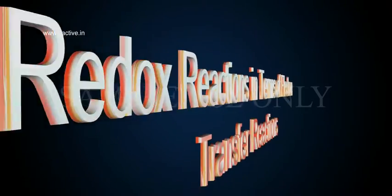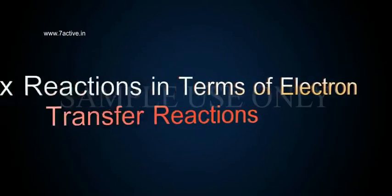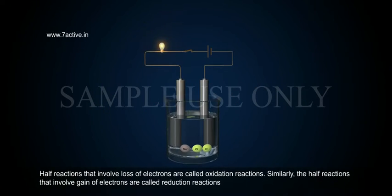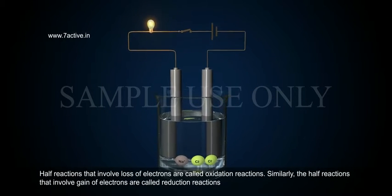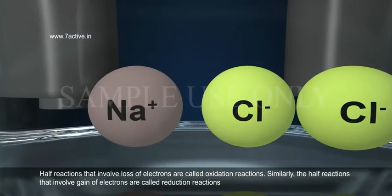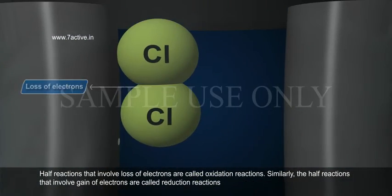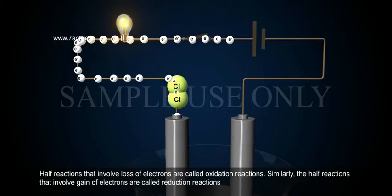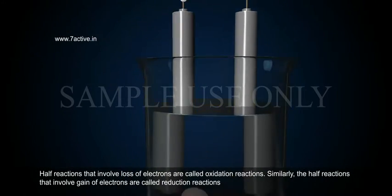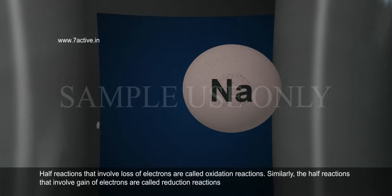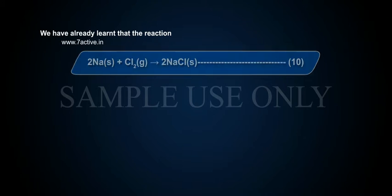Redox reactions in terms of electron transfer: half reactions that involve loss of electrons are called oxidation reactions. Similarly, the half reactions that involve gain of electrons are called reduction reactions.